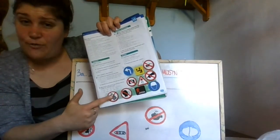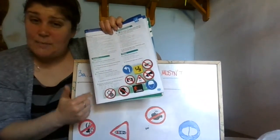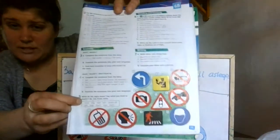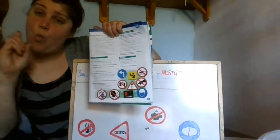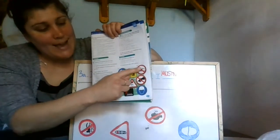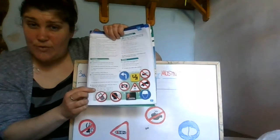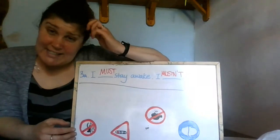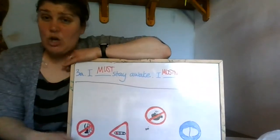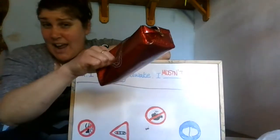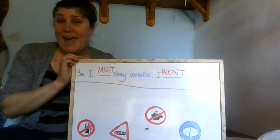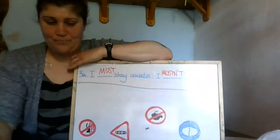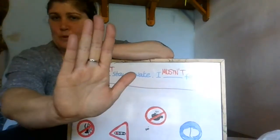Look at exercise 5. Here we have some different signs and some verbs. Can you see the verbs in the box? We need to write one instruction for each sign using these verbs. Let's look at the verbs quickly to make sure we understand them. 'Show' — show me your pencil case — that's when you hold it for another person to look at. 'Stop' — easy peasy.